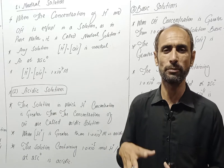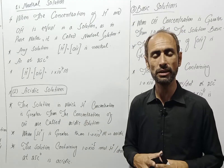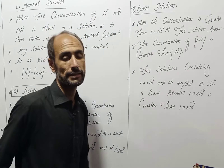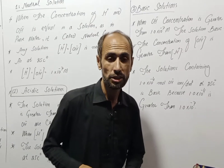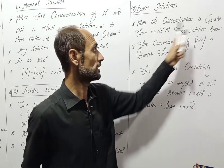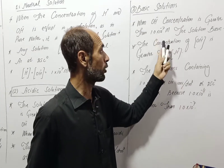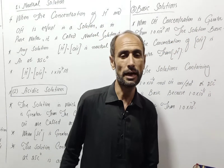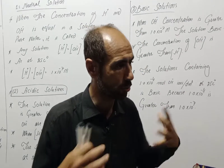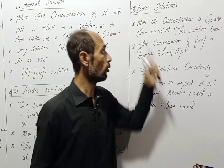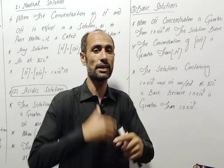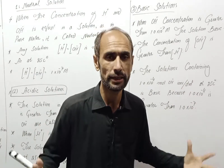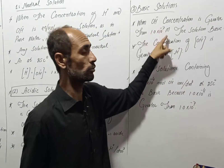The third type is Basic Solution. A Basic Solution is one in which the OH ion concentration is greater than 1.0 × 10⁻⁷ molar. Solutions where the hydroxyl ion concentration is greater than 1.0 × 10⁻⁷ are called basic solutions.